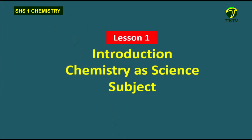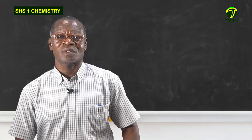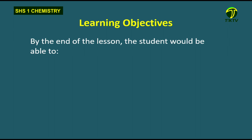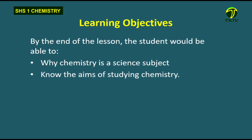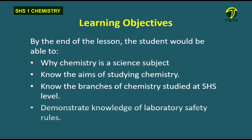We will discuss why chemistry is a science subject, and why we study chemistry — looking at the aims or objectives of studying chemistry at SHS or in general. By the end of the class, students should be able to know why chemistry is studied as a science subject, the aims of studying chemistry, the branches of chemistry studied at SHS level, and how to demonstrate knowledge of laboratory safety rules.